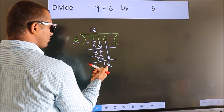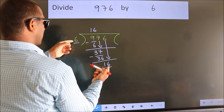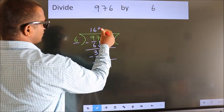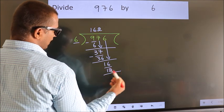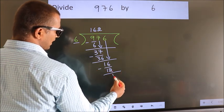A number close to 16 in 6 table is 6 2. Now we subtract. We get 4.